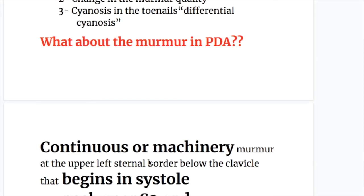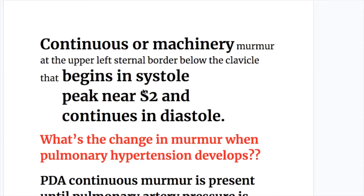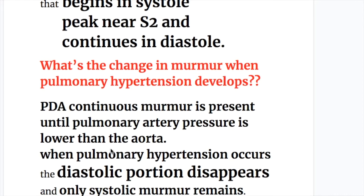The murmur in PDA is a continuous or machinery murmur at the upper left sternal border below the clavicle. It begins in systole, peaks near the second heart sound, and continues into diastole.